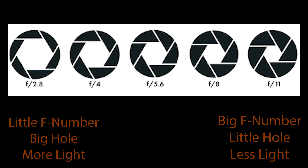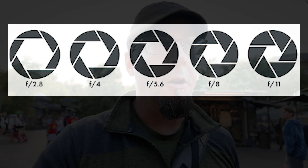All you need to remember is that the smaller the number the bigger the hole, and the bigger the number the smaller the hole. So an f2 aperture lets in more light than an f4 aperture, and an f4 aperture lets in more light than an f8 aperture. Real simple: little number, more light; big number, less light. Kind of counterintuitive but once you memorize it you'll never forget it.